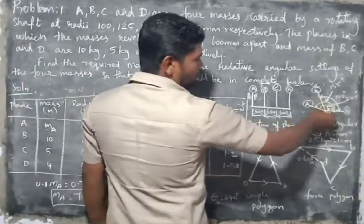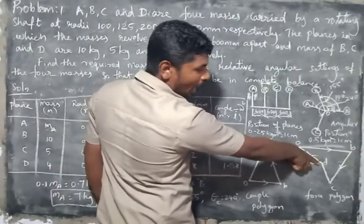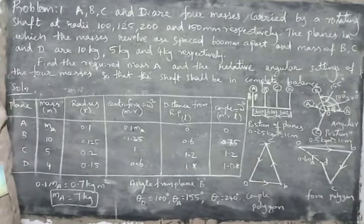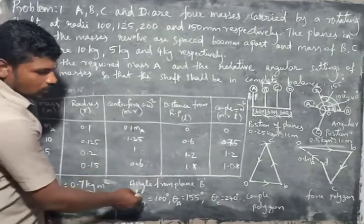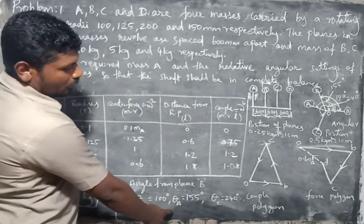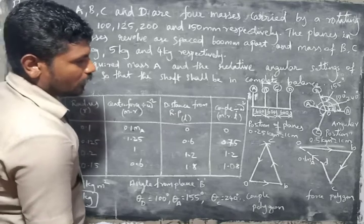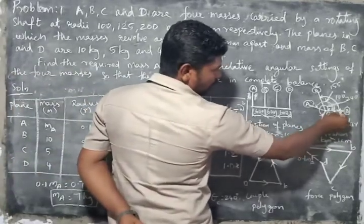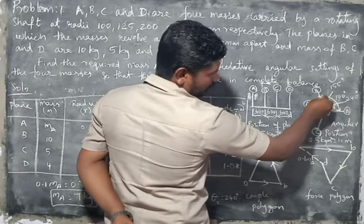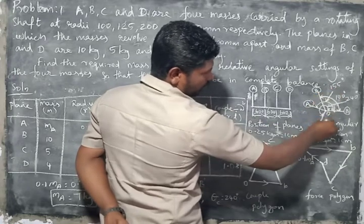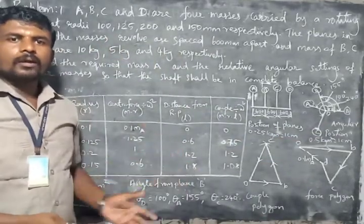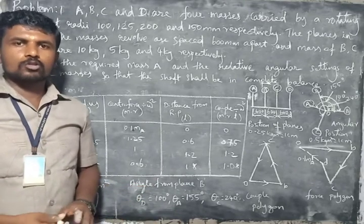After this, we check all angular positions and draw a parallel line to D-O in the angular position diagram and measure the angular values. Measuring from the B plane: theta D = 100 degrees, theta A = 155 degrees, theta C = 240 degrees. So B to D is 100 degrees, B to A is 155 degrees, and B to C is 240 degrees. With these settings the system will be balanced. In the next class I will teach you about another important problem. Thank you.